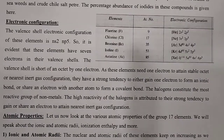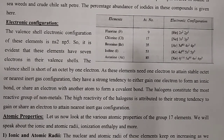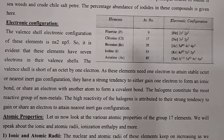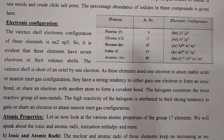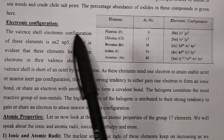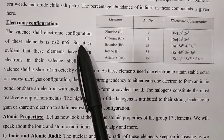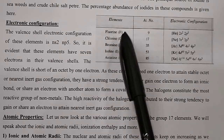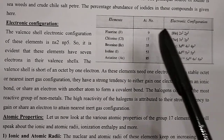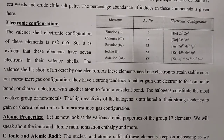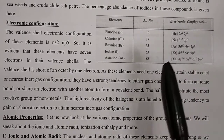Now we start with electronic configuration. As we are already aware, the halogen family has 7 electrons in the valence shell, that is ns² and p⁵. Because of this, they are always ready to gain one electron and convert to the nearest noble gas configuration, completing the octet. The valence electronic configuration of these elements is ns²p⁵. Starting from fluorine: atomic number 9 (2s²2p⁵), chlorine: 17 (3s²3p⁵), bromine: 35 (4s²4p⁵).